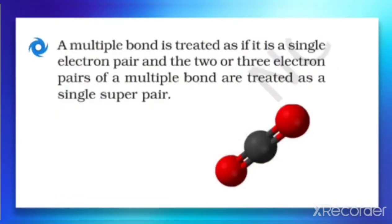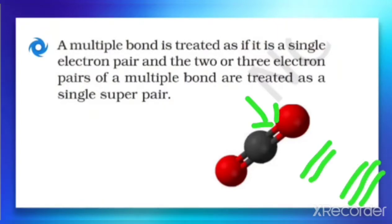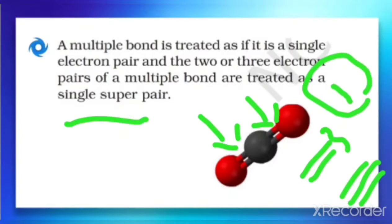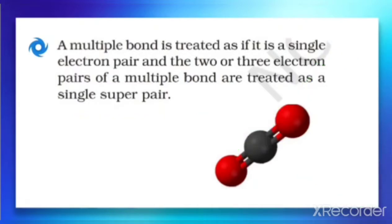The next postulate: a multiple bond is treated as if it is a single electron pair, and the two or three electron pairs of a multiple bond are treated as a single super pair. This means in the case of a double bond, it is considered as one pair, not two pairs. Similarly, a triple bond, which actually contains three pairs of electrons, is considered as a single super pair.